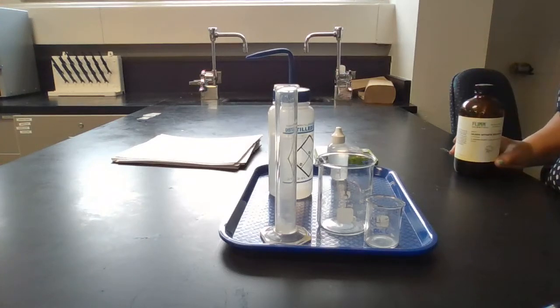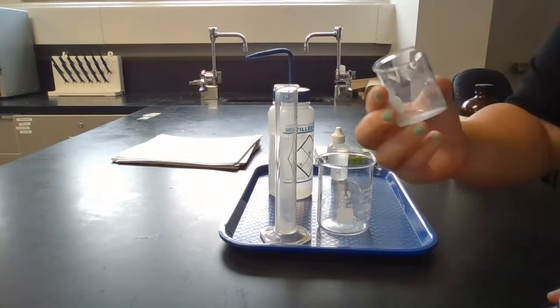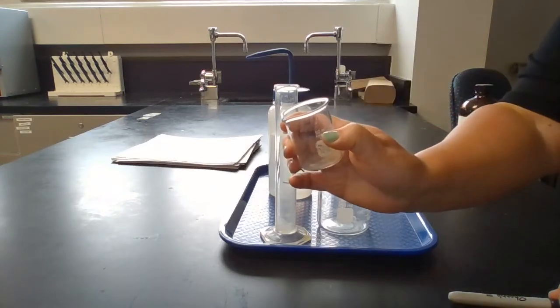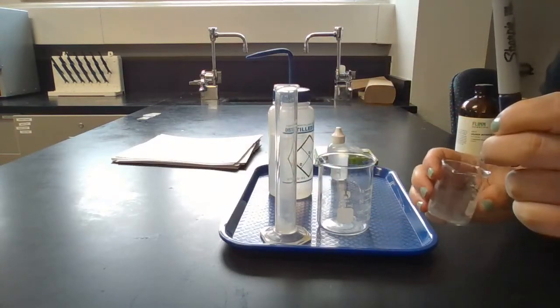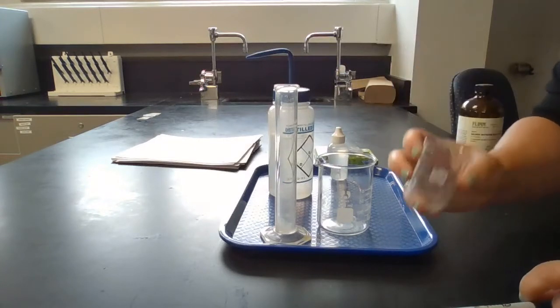This lab is going to take place over three days, so here's what you will do on the first day. First you will label your 50 milliliter beaker, which is the smaller one. It says 50 ml right there, and you can just use a sharpie to do that and just write your initials and whatever period you are.